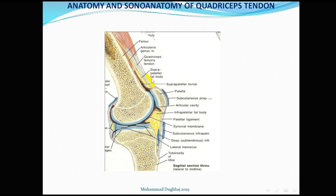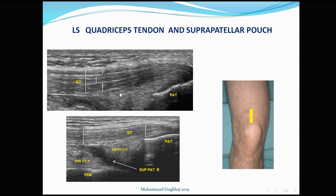In the long sagittal section we have the suprapatellar soft tissue, which includes the suprapatellar fat pad, the pre-femoral fat pad, the suprapatellar bursa, the articularis genus muscle, and the infrapatellar fat pad body with the deep and superficial bursa. Superior to the pre-femoral fat pad is the suprapatellar bursa and the articularis genus muscle.